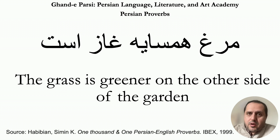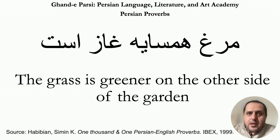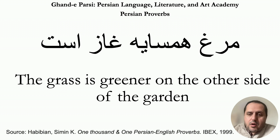And then همسایه means neighbor. It is a word that has been made by a prefix of ham, which is similar to 'mate' or 'co', and then سایه which means shadow. So همسایه, which is equivalent to neighbor in English, literally means 'of the same shadow.' And then we have قاز, which is goose.